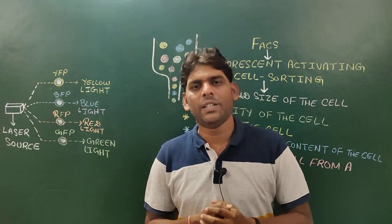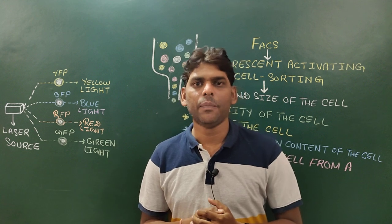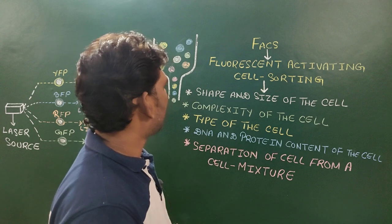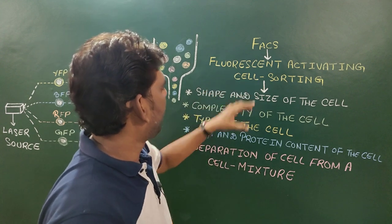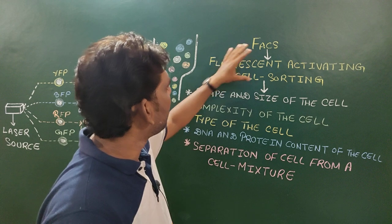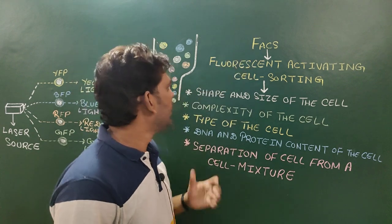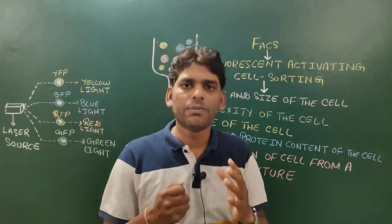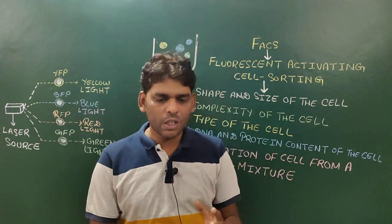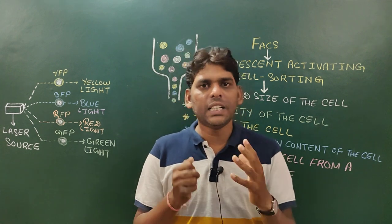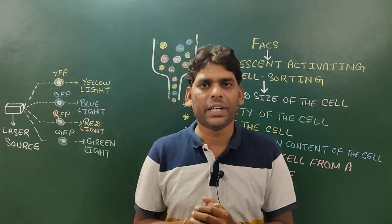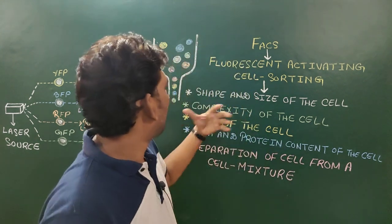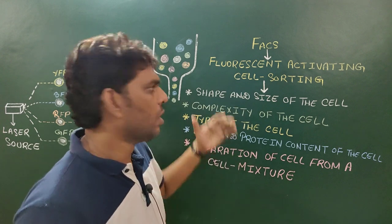Welcome friends, welcome to another video lecture of Biovisan Academy. In today's video lecture we are going to understand about Fluorescence Activated Cell Sorting, which is also known as FACS. FACS is a modified version of flow cytometry, so if you want to understand about FACS then you should have an idea about flow cytometry.